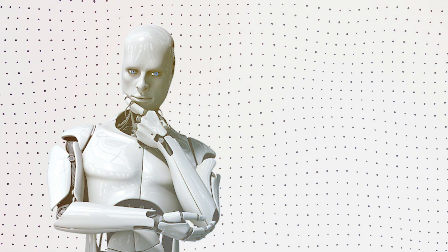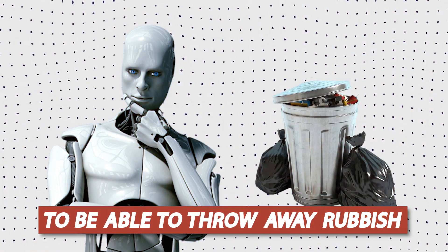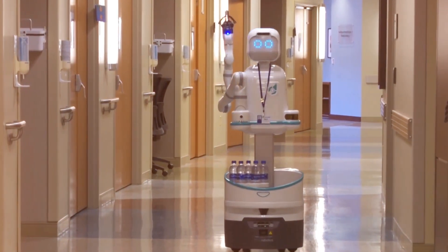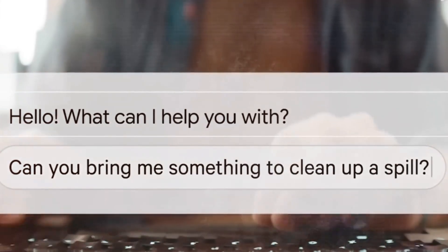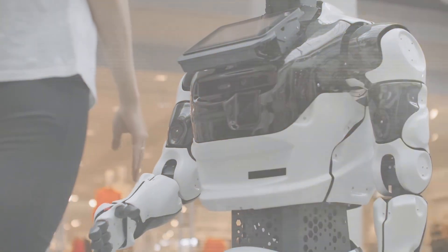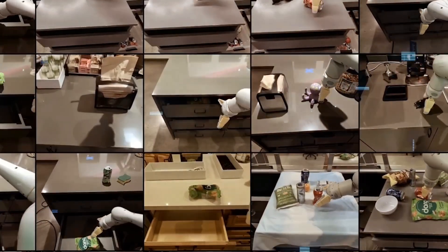For example, if you wanted earlier systems to be able to throw away rubbish, you would have to specifically educate them to recognize trash as well as to pick it up and toss it away. Because RTX can transfer information from a huge corpus of web data, it already knows what trash is and can recognize it without any specific training. It even knows how to throw away rubbish, despite the fact that it has never been instructed to do so.